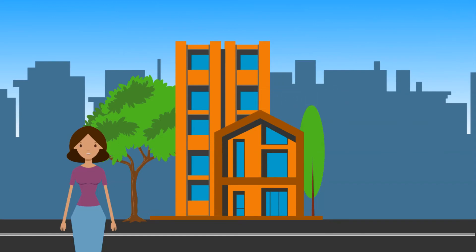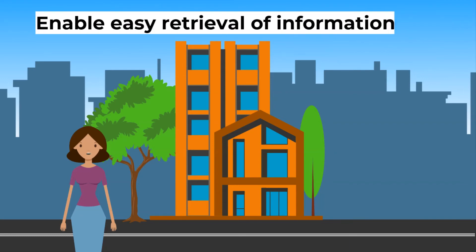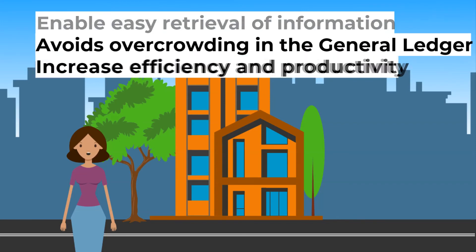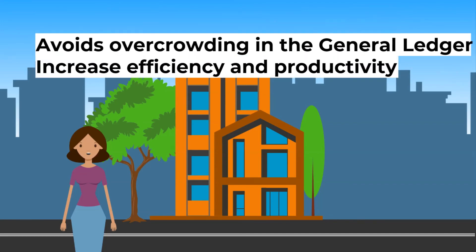There are also special journals. Transactions of a similar nature are recorded together, and only the total amount in a special journal is posted to the general ledger. The advantages are: they enable easy retrieval of information, they avoid overcrowding in the general ledger, and they can increase efficiency and productivity.